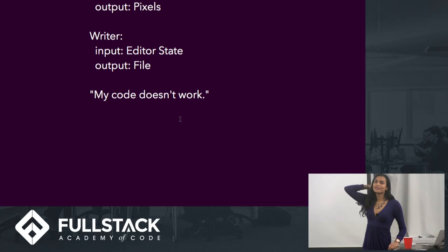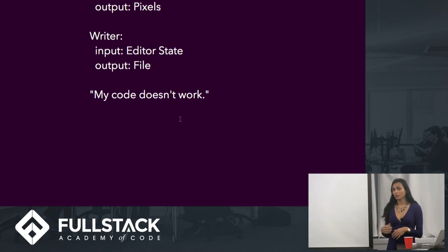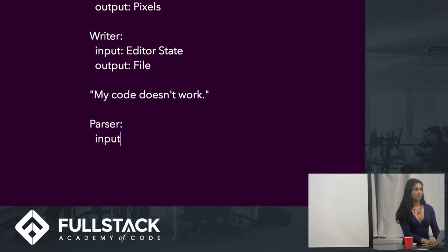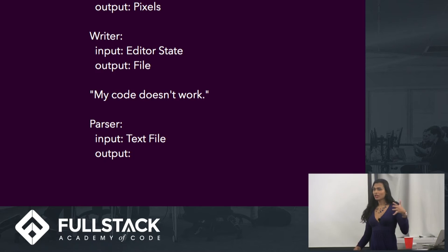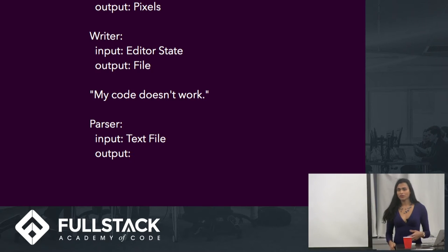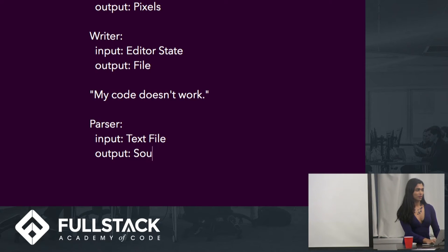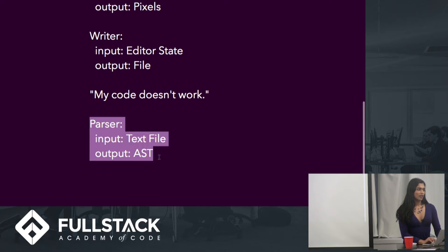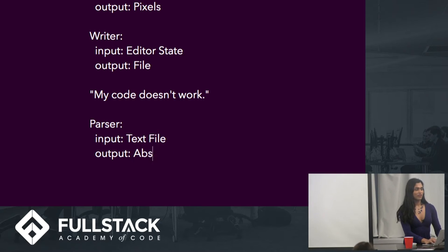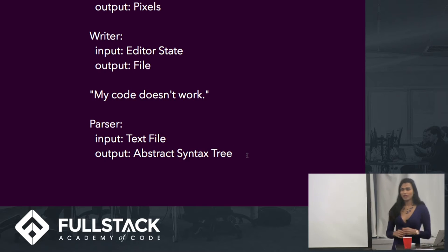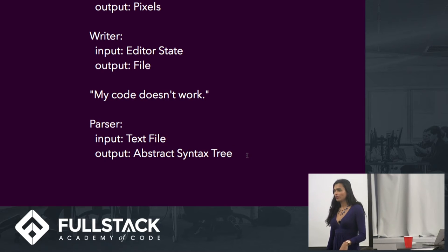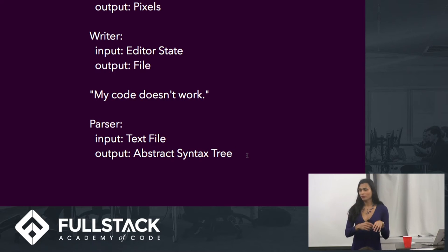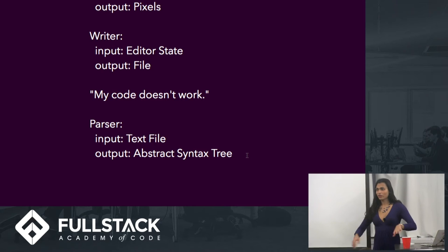You can build in a parser of some kind. What's it going to consume? Probably a text file. And the output is going to be a tree of some kind — some kind of representation of the source. I'll call it the AST. An AST is an abstract syntax tree, which is a tree of objects that describes a source file. So if you have 2 + 2, it'll be like: operation plus, number literal 2, number literal 2. It describes the expressions.